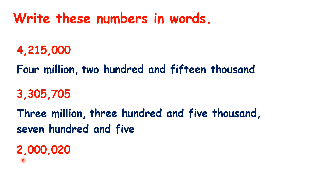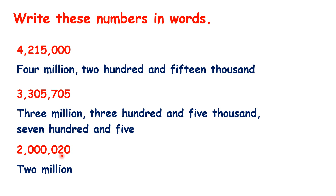Now this last number looks a bit strange, but we follow the same steps. The first comma separates our millions and our hundred thousands, so we can write two million. But here, when writing the number in words, we don't need a comma, because we don't have any thousands at all, and we don't have any hundreds. We have zero in all our thousands place value columns, so when writing the number in words, we don't need to write thousand. Instead, we can just move straight on to looking at our hundreds, tens, and units. We don't have any hundreds — all we have is two in our tens to represent twenty. So we can finish writing this number in words by just writing and twenty.